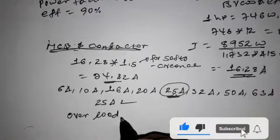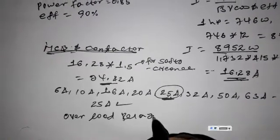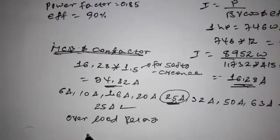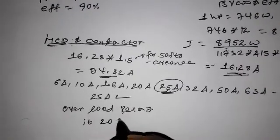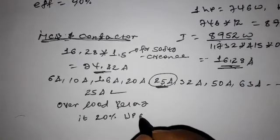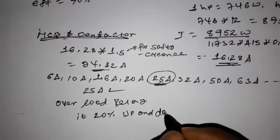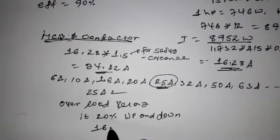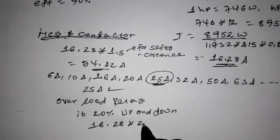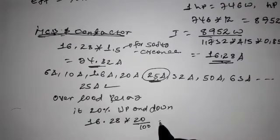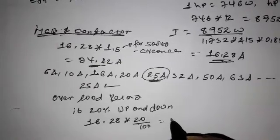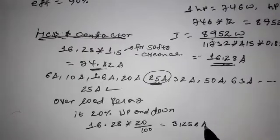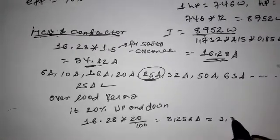Overload relay. 20% up and down. 16.28 times 20 divided by 100 is equal to 3.256 Ampere, approximately 3.3 Ampere.